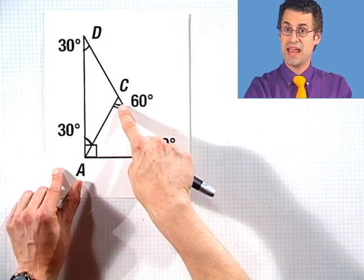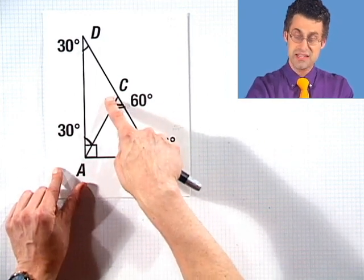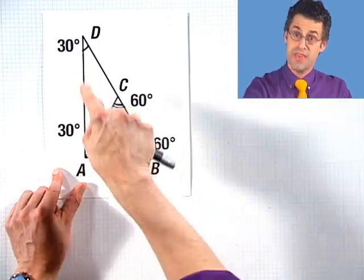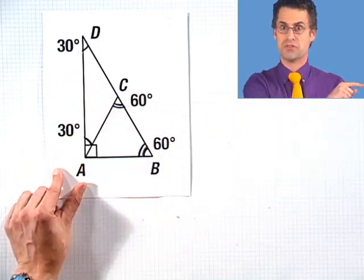This is 60. If I subtract 180 minus 60, I see 120 degrees. That's bigger than 90. This is an obtuse triangle. Look how we can classify triangles by looking at their angles.